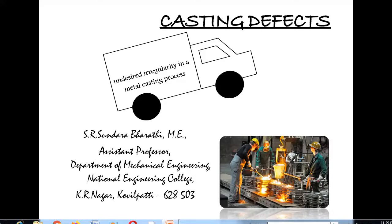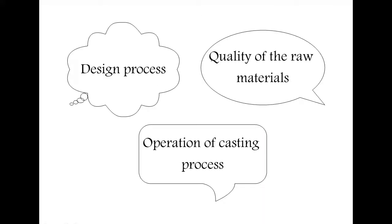Good morning. In this class we will discuss casting defects. These are the important factors that influence a casting process: design process, quality of the raw material, and operation of the casting process. Before starting the process, give more importance to the design — avoid sharp corners and give fillet arrangements on the component. The quality of raw materials determines how to confirm and ensure that quality material produces a defect-free component.